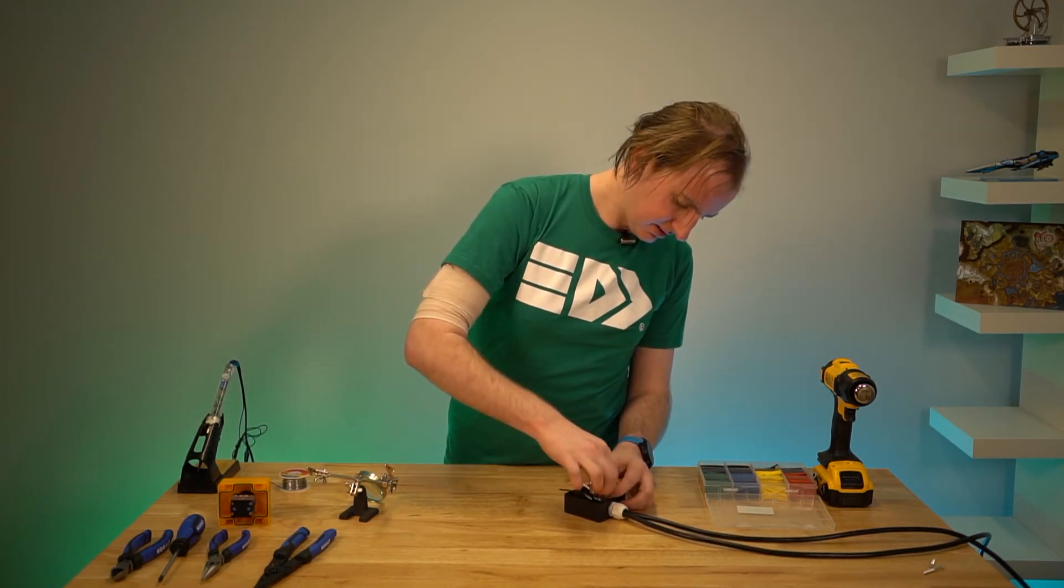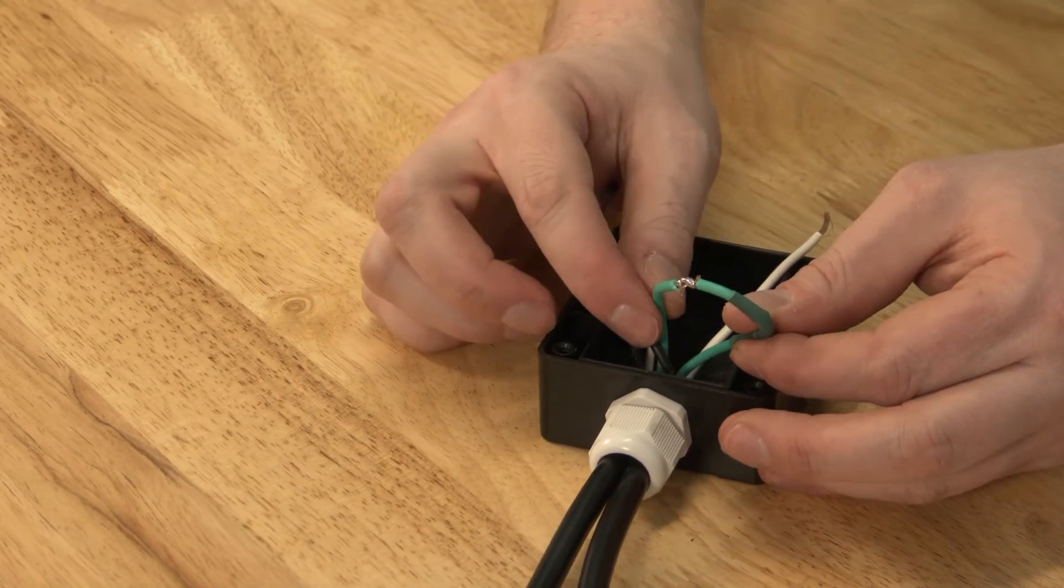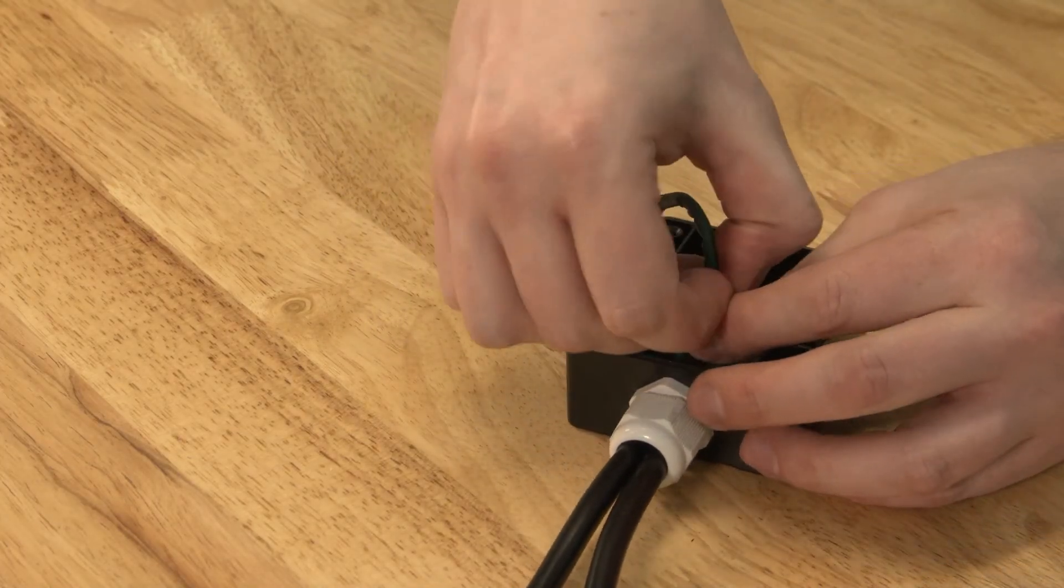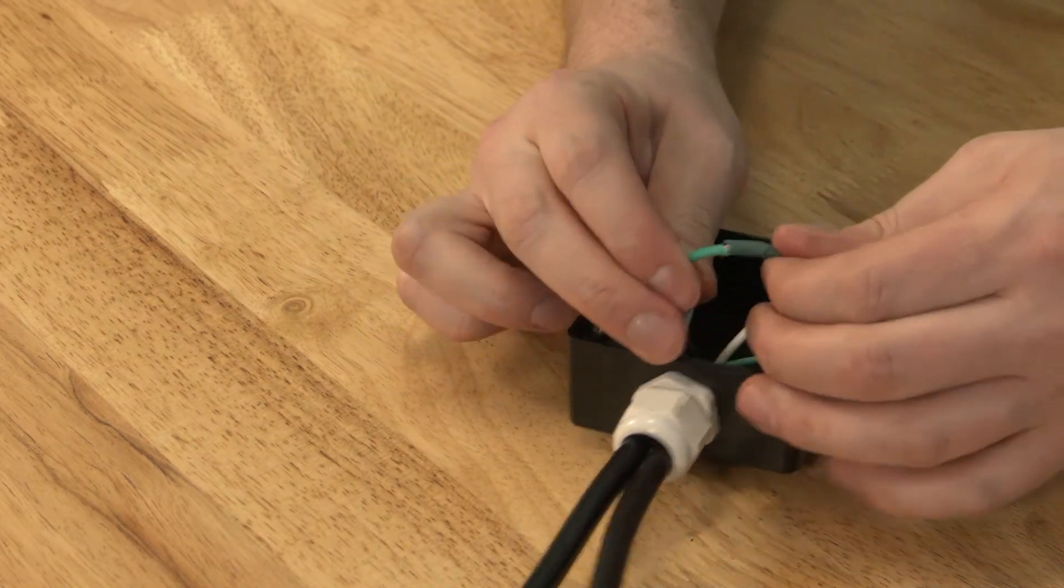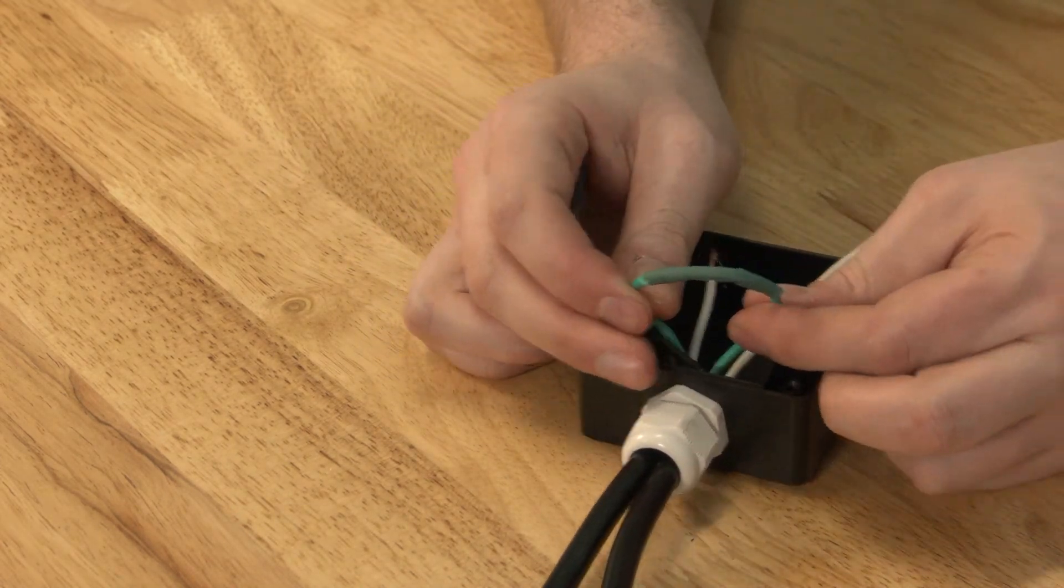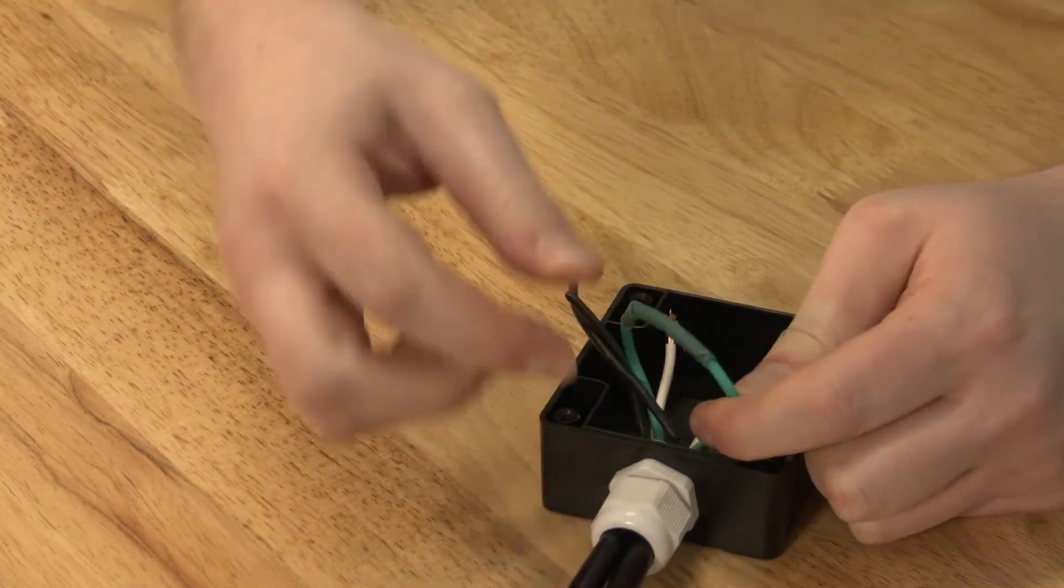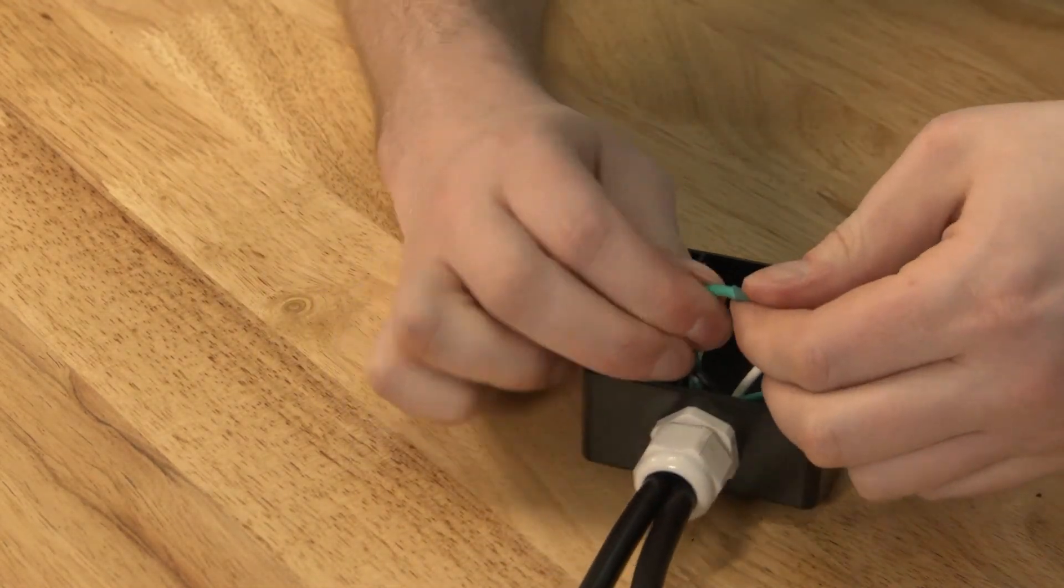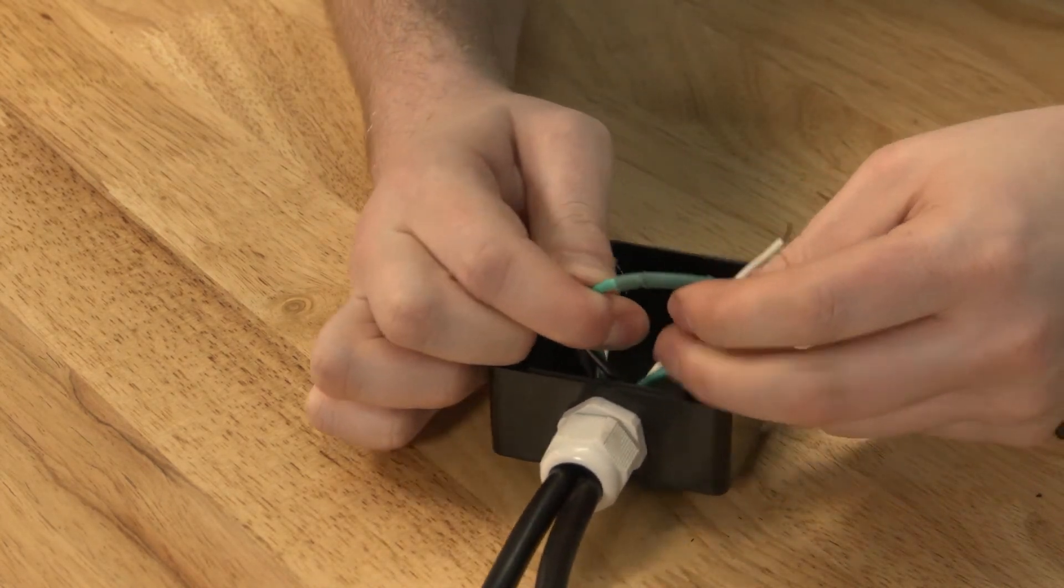And then I'm going to take my heat shrink and I'm going to slide that heat shrink over the wire. Now, the thing with heat shrink is when you're soldering near it, you've got to be real careful to make sure it doesn't heat up, otherwise you'll shrink it prematurely. And this heat shrink is maybe a little bit too small for this, but let's make sure it covers all the exposed ends there.